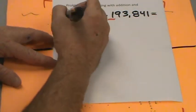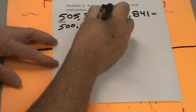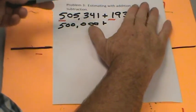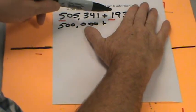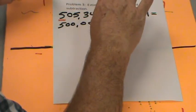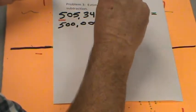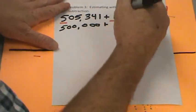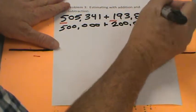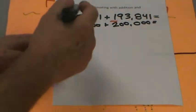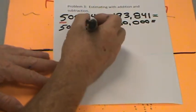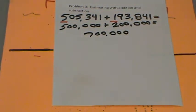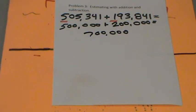So we're going to round 505,341 to five hundred thousand. Now for 193,841 — pretend we're looking at 100 and 200. Is 193 closer to 100 or 200? 193 is only seven away from 200, but 93 away from 100, so we round up. Five plus two is seven, and then five zeros — so about seven hundred thousand people live in Fresno and Bakersfield combined.